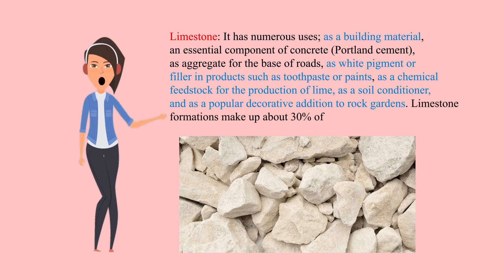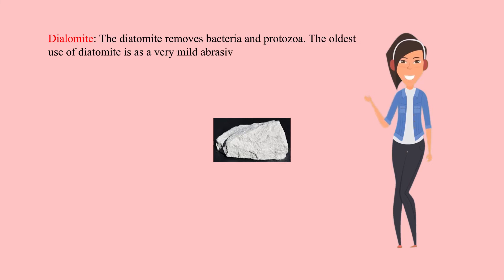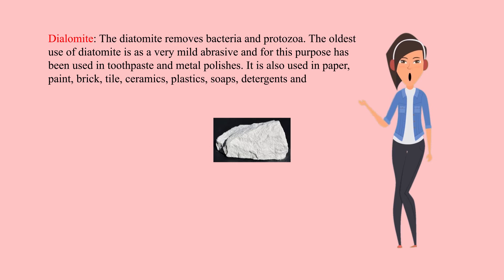Limestone formations make up about 30% of the world's petroleum reservoirs. Diatomite removes bacteria and protozoa. The oldest use of diatomite is as a very mild abrasive, and for this purpose it has been used in toothpaste and metal polishes. It is also used in paper, paint, brick, tile, ceramics, plastics, soaps, detergents, and other products as filler.